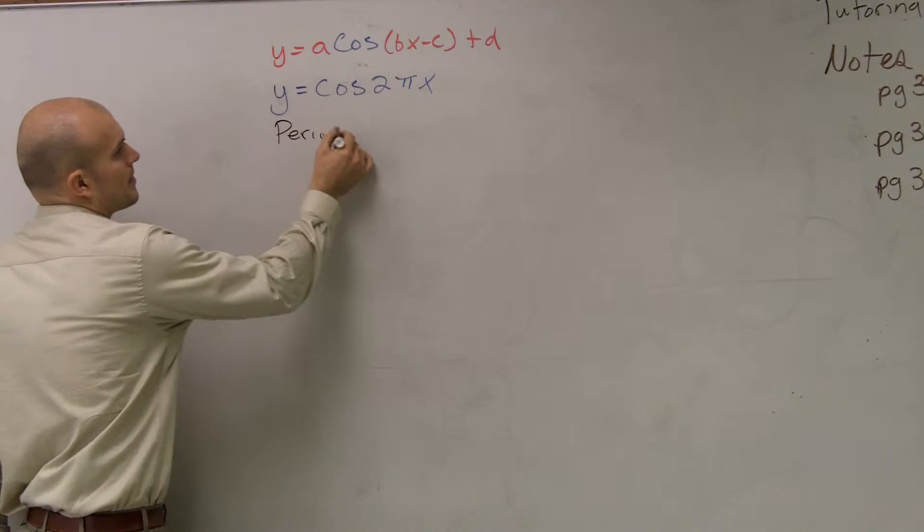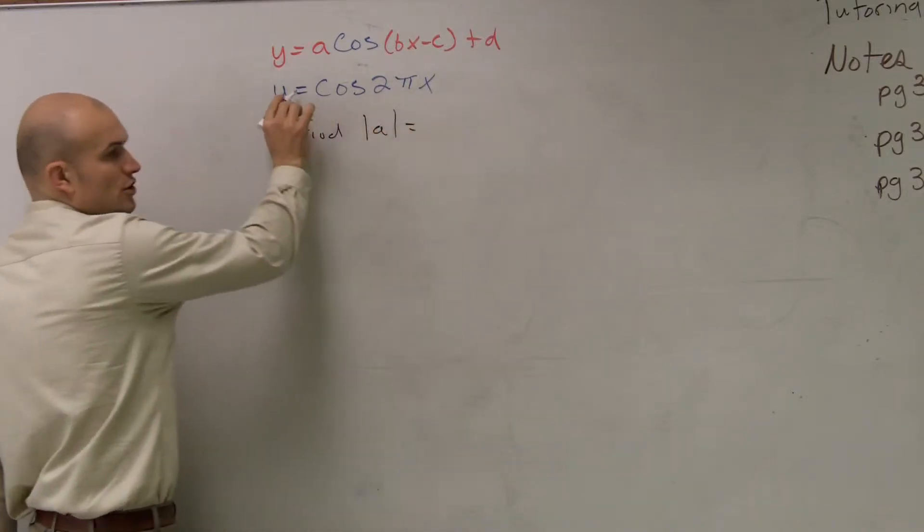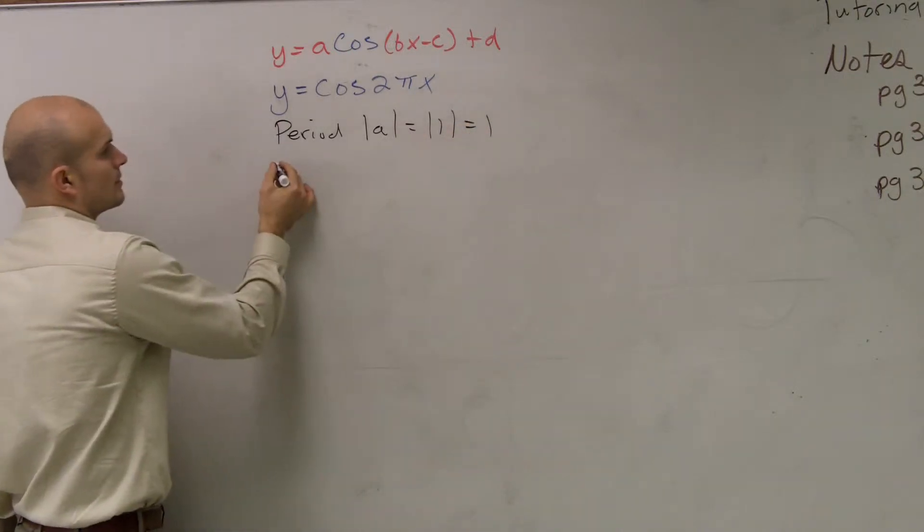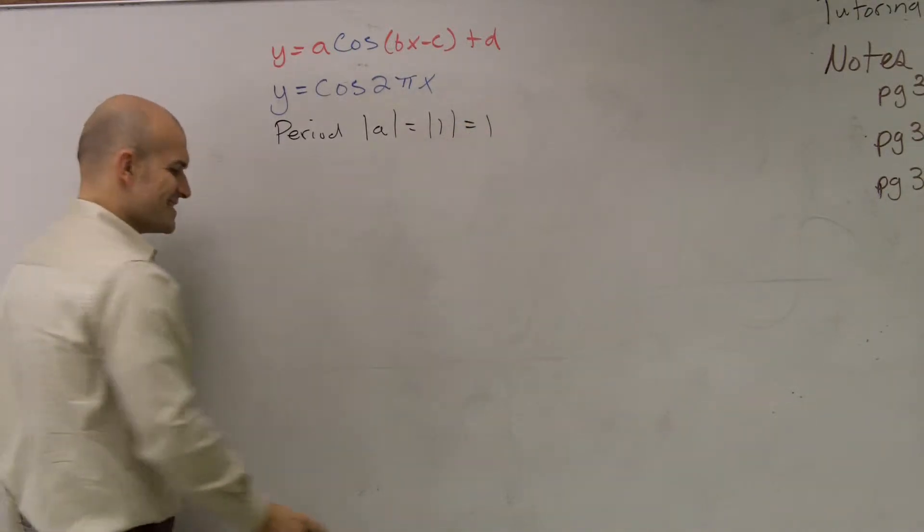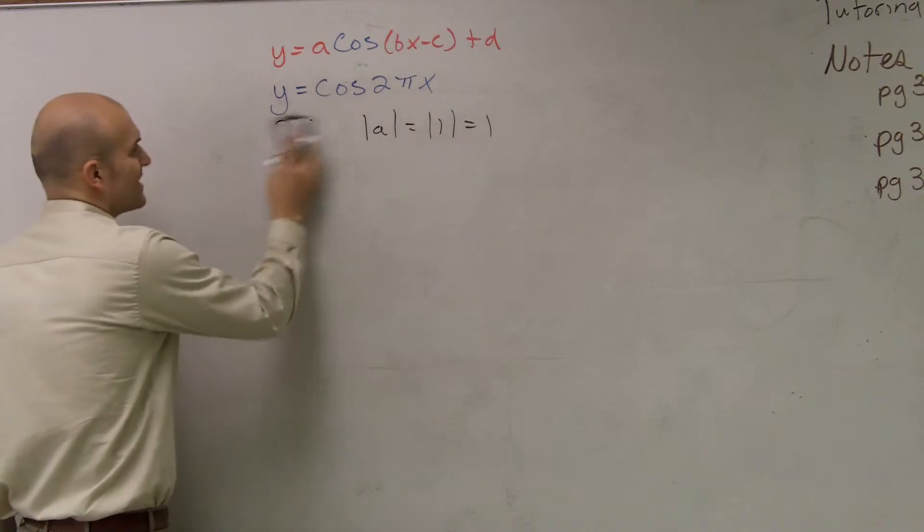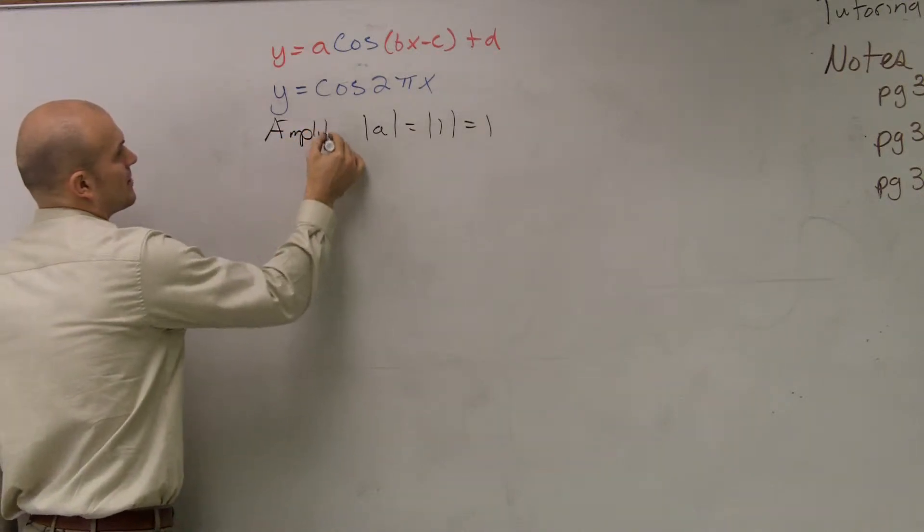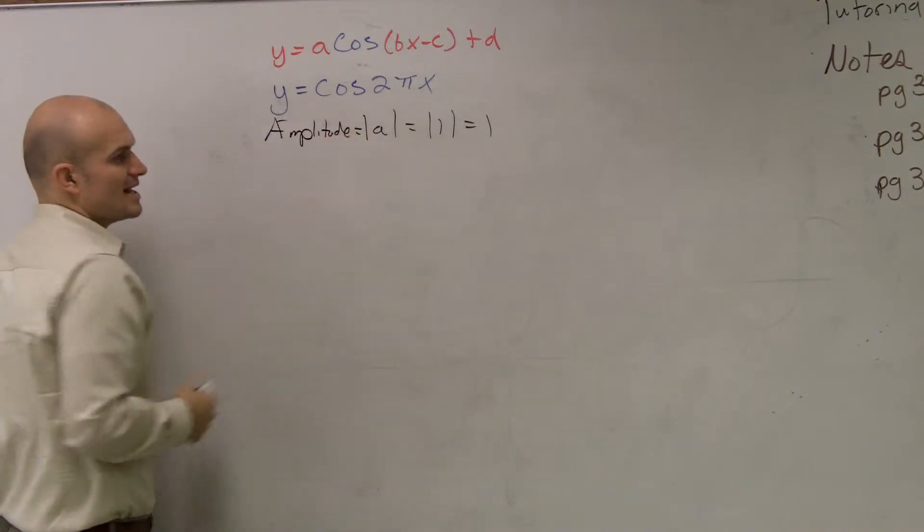Period. Absolute value of A. There's no number in front, so we know it's absolute value of 1, which is 1. That's not the period, that's the amplitude. I guess I shouldn't have talked so fast. That's your amplitude.